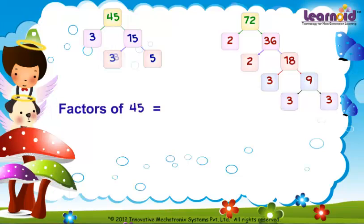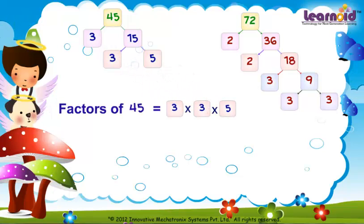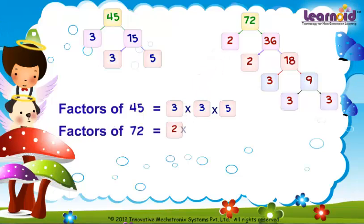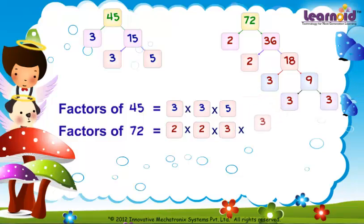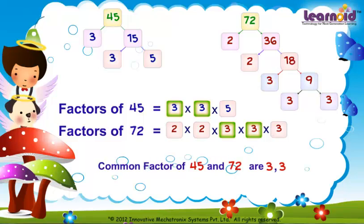Factors of 45 are 3 into 3 into 5. Factors of 72 are 2 into 2 into 3 into 3 into 3. Common factors of 45 and 72 are 3 and 3.